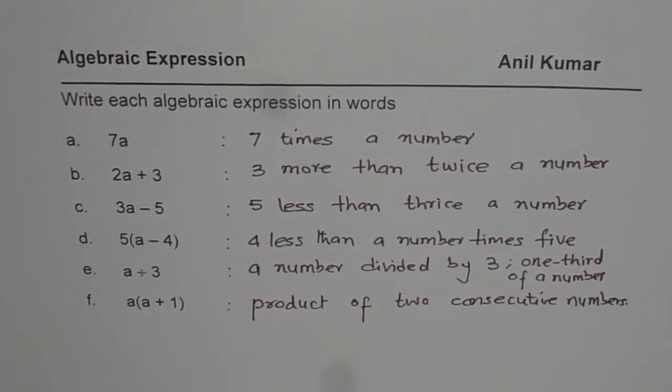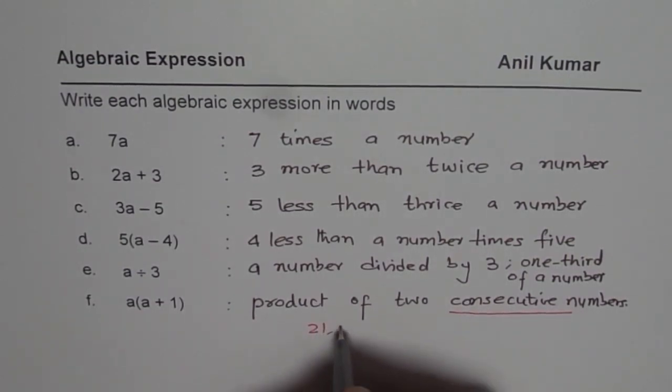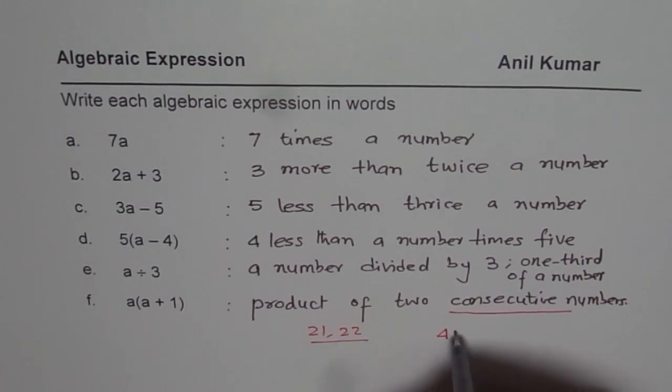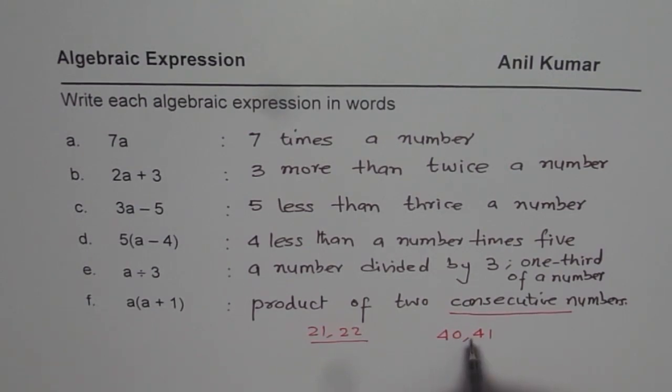So it is important to understand the term consecutive. The consecutive numbers are numbers which come after one another. For example, if I write 21 and 22, these are consecutive numbers. Let's say 40 and 41, they are consecutive numbers. So you will find that the difference between the two is just by 1. So if one number is, let us say n, the other one is n plus 1, you get the idea.